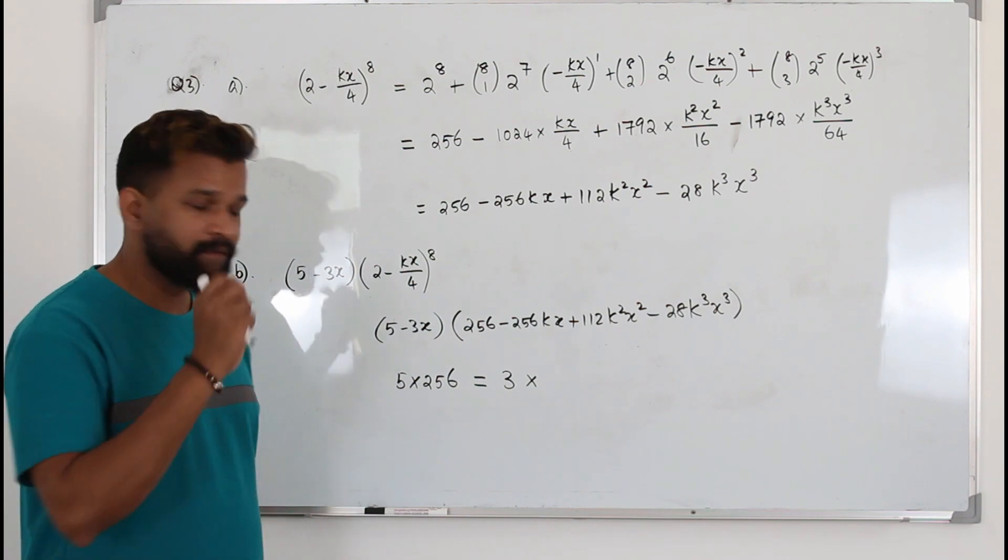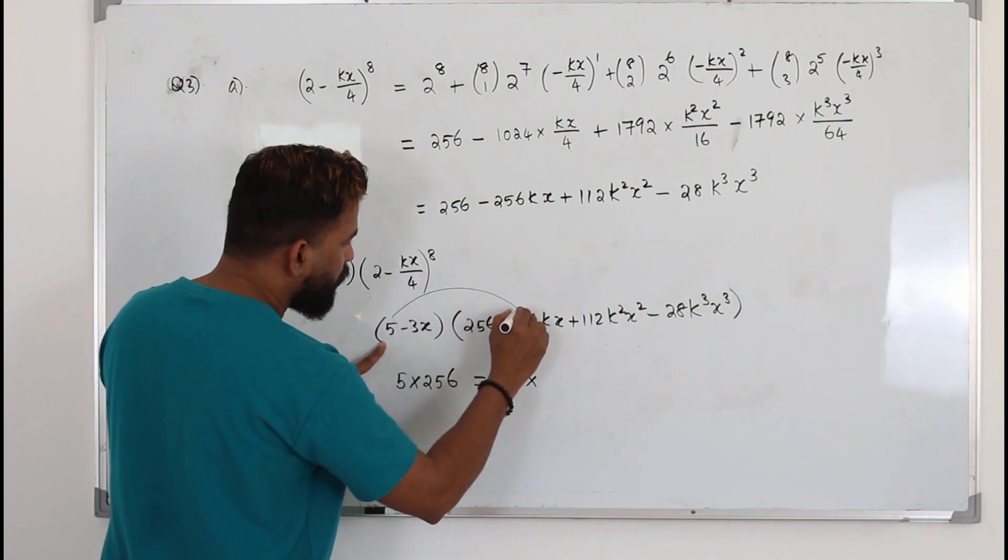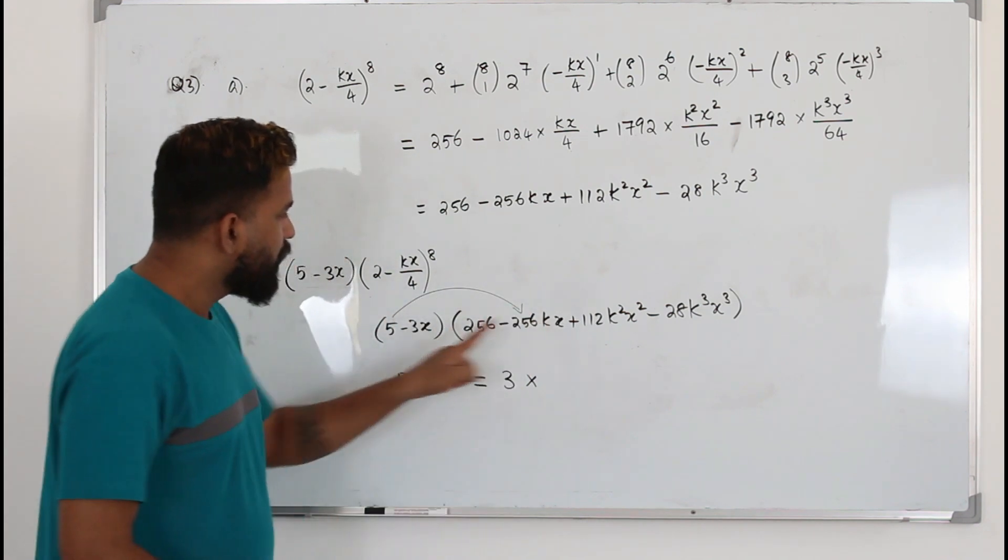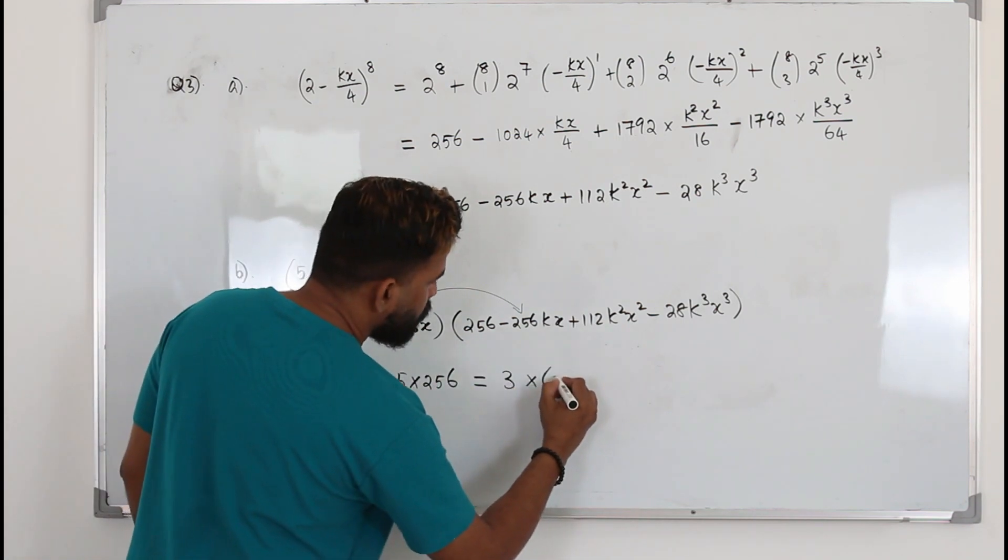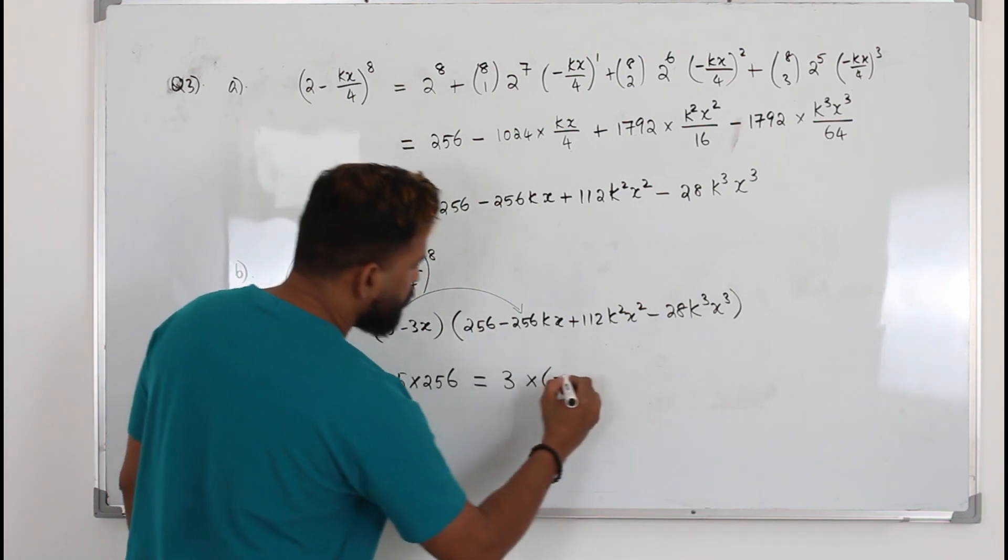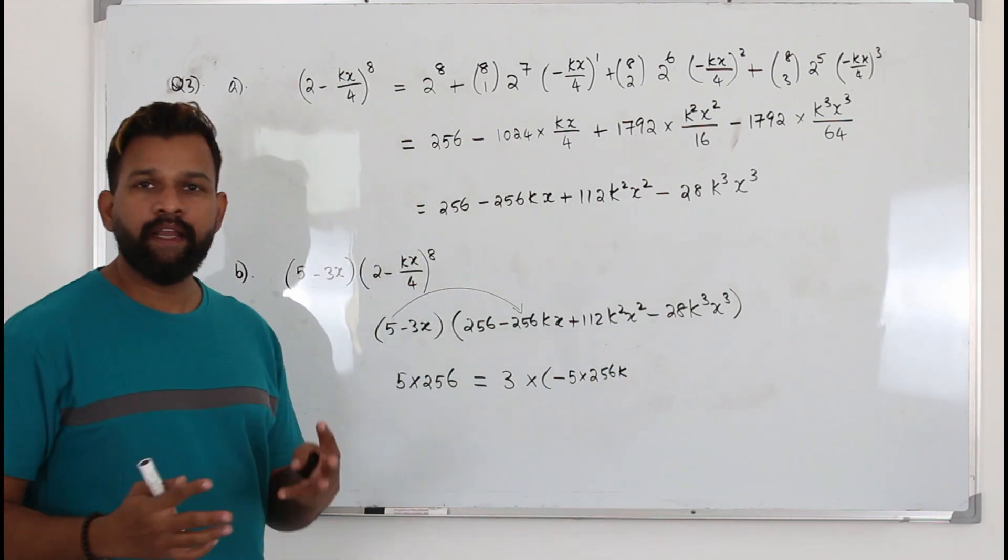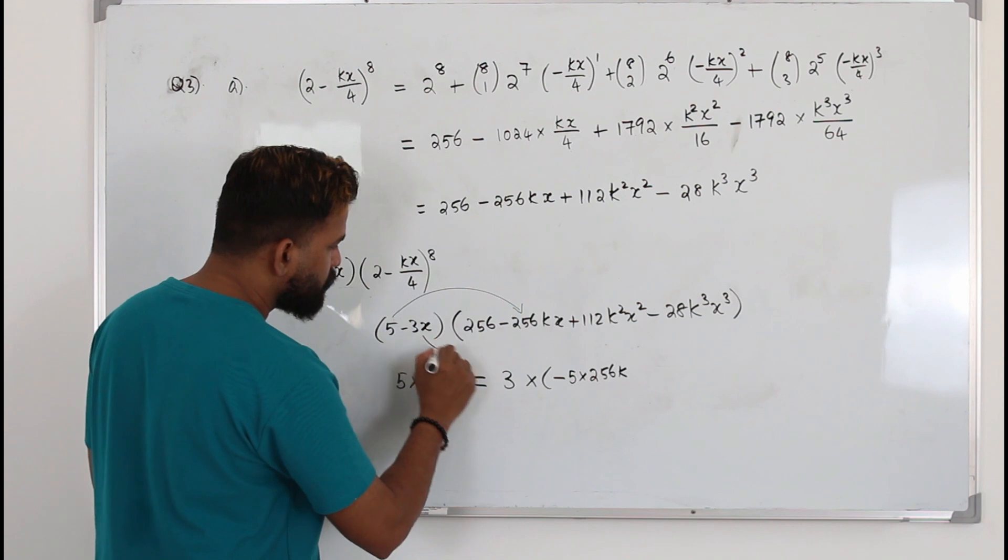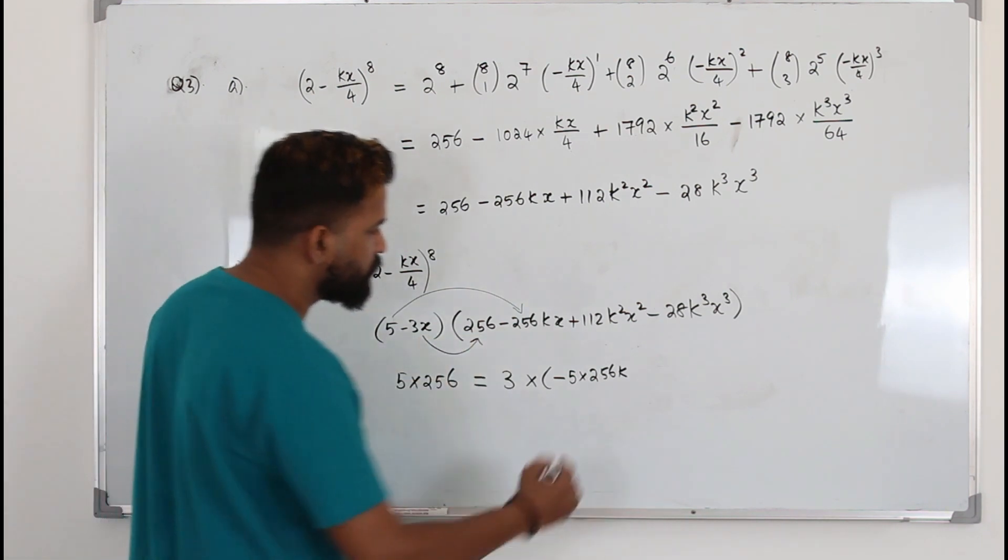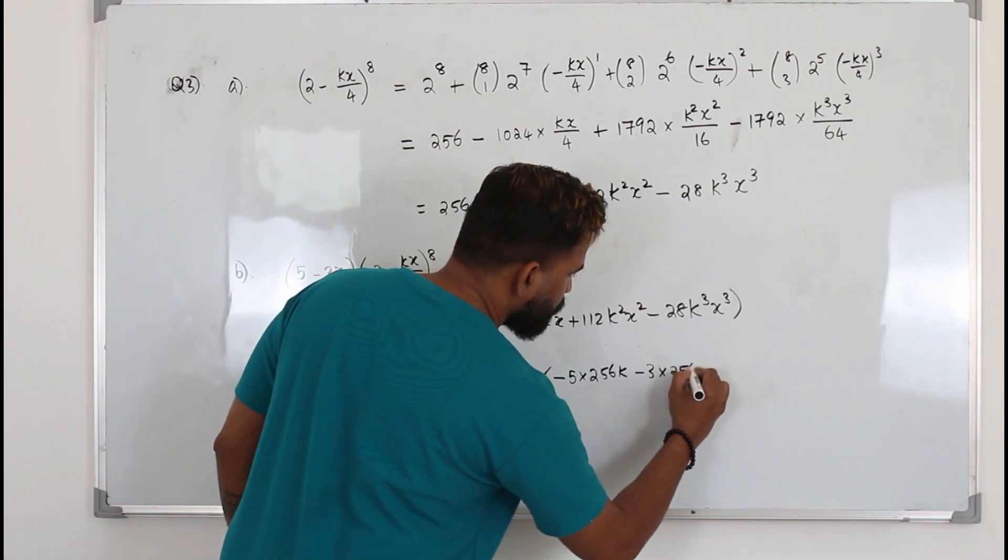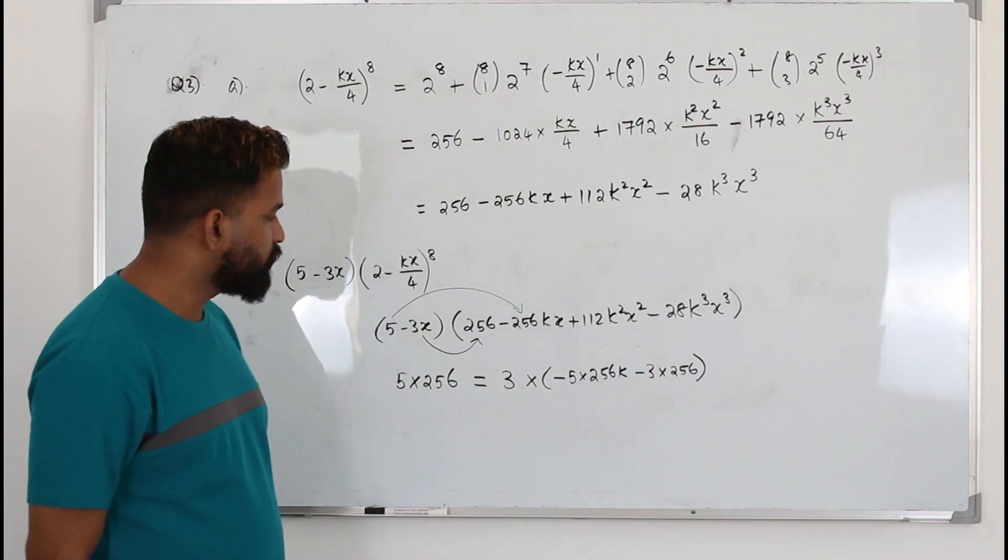Now we need to find the coefficient of x. You got to be very careful here. When you take 5 and multiply everything, when you multiply 5 times this, you will have x in it. So you take the coefficient of x is 5 negative, because you have a negative sign here, 5 times 256k. Is it the only x term? No. When you multiply this times this, again you get a coefficient of x minus 3 times 256. So that's the coefficient of x. So you need to carefully extract the coefficient of x.